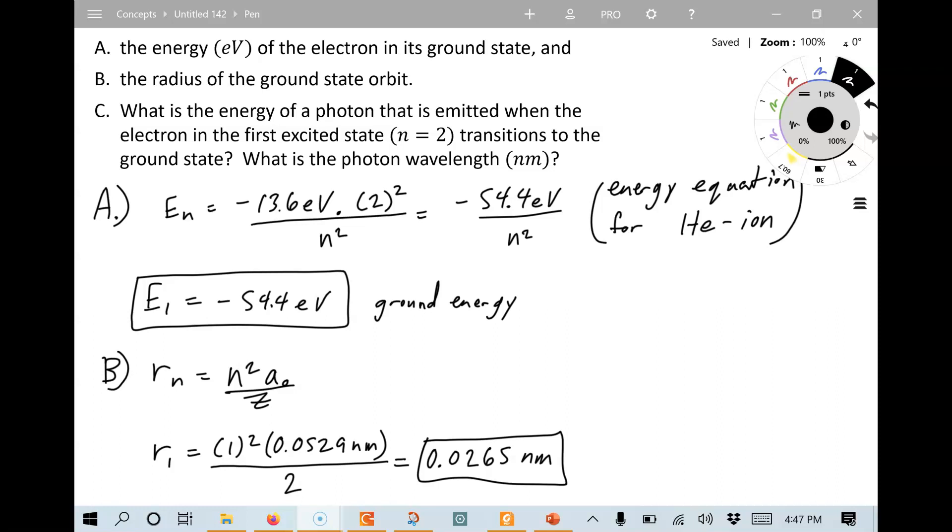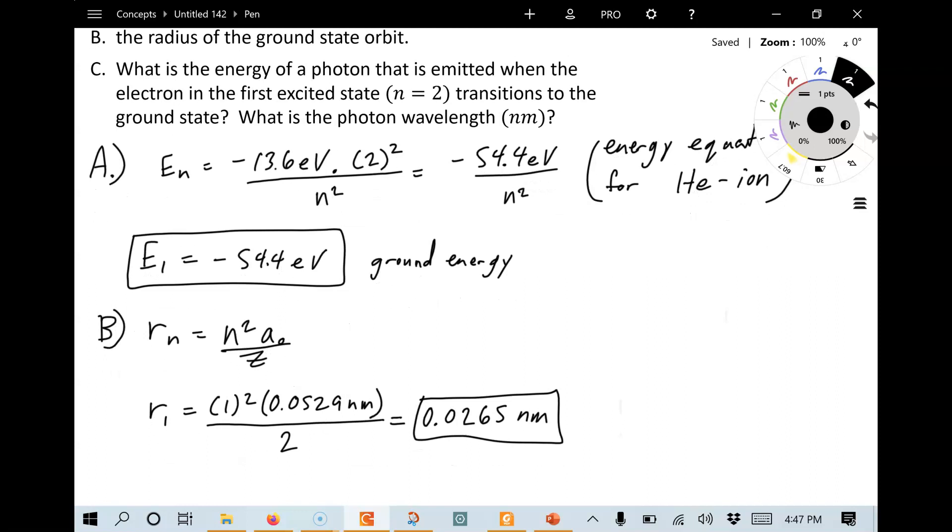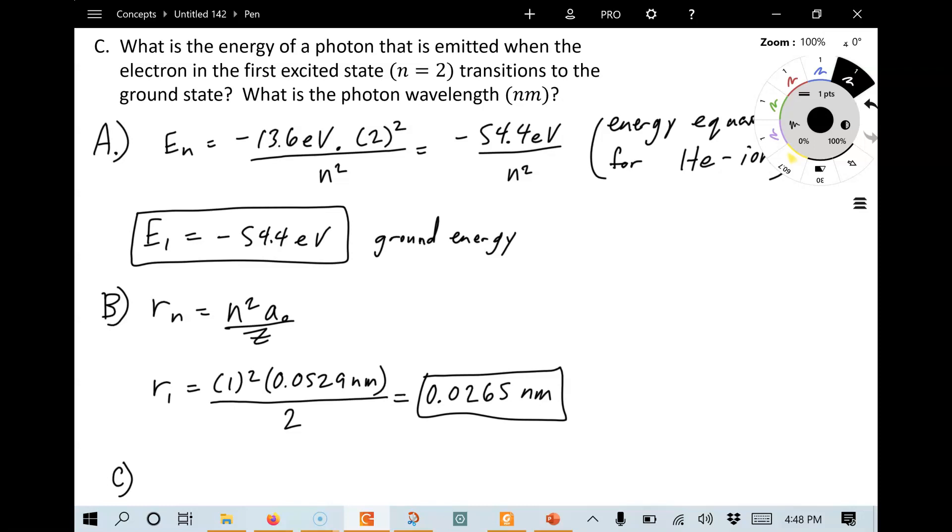What is the energy of a photon that is emitted when the electron in the first excited state, n equals 2, transitions to the ground state? So notice that since the ground state is n equals 1, states that are higher in energy than the ground state, they're called excited states, but the first excited state is n equals 2, the next up from the ground state. Well, we've done this before for hydrogen. The process is the same for helium. We just need to know the two energy levels. We know the ground state. Therefore, we need to calculate what is the first excited state, n equals 2.